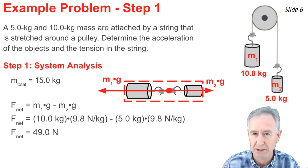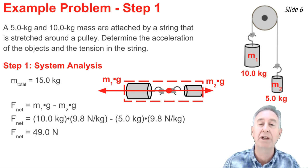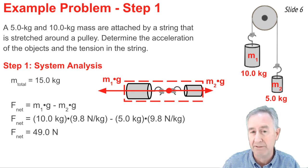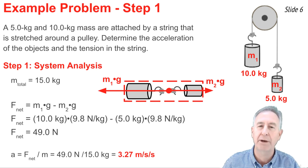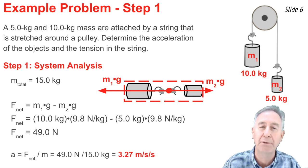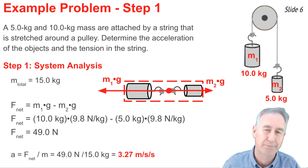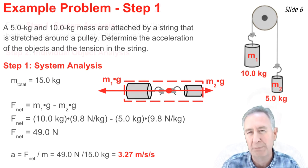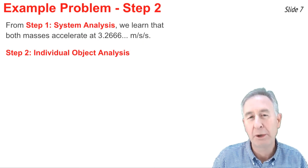Now that we know the mass of the system and the net force on the system, we can calculate the acceleration as F net divided by m. 49.0 divided by 15.0 comes out to be 3.2666 repeating meters per second per second.